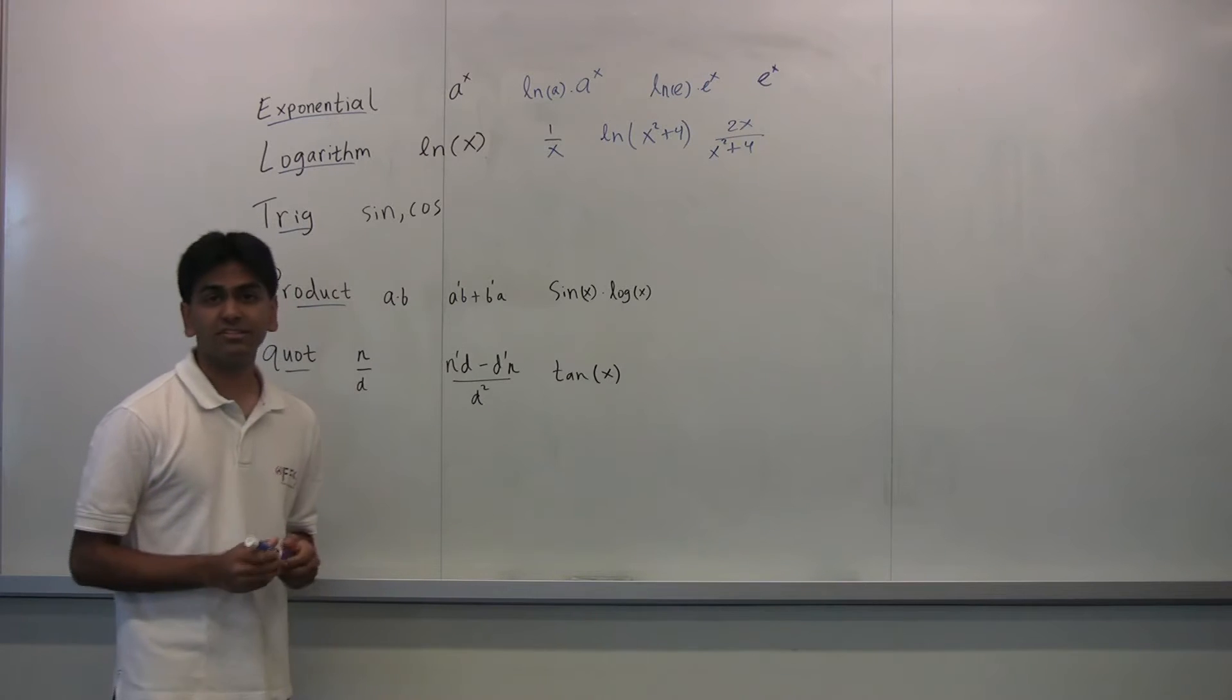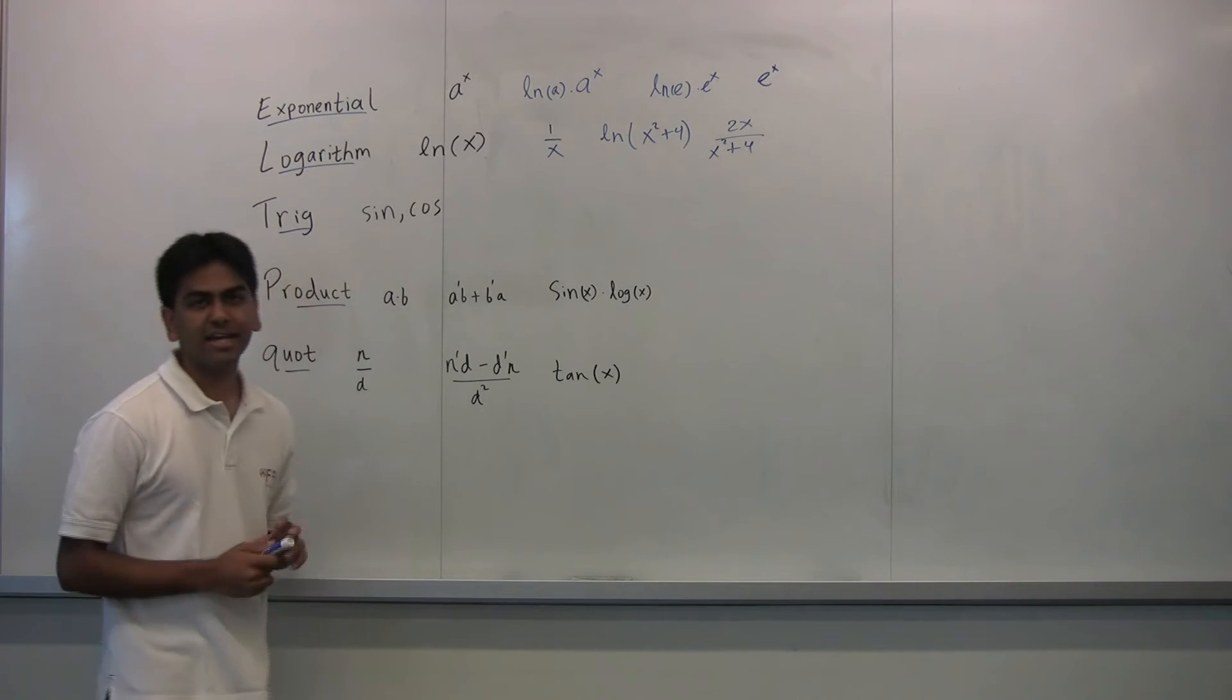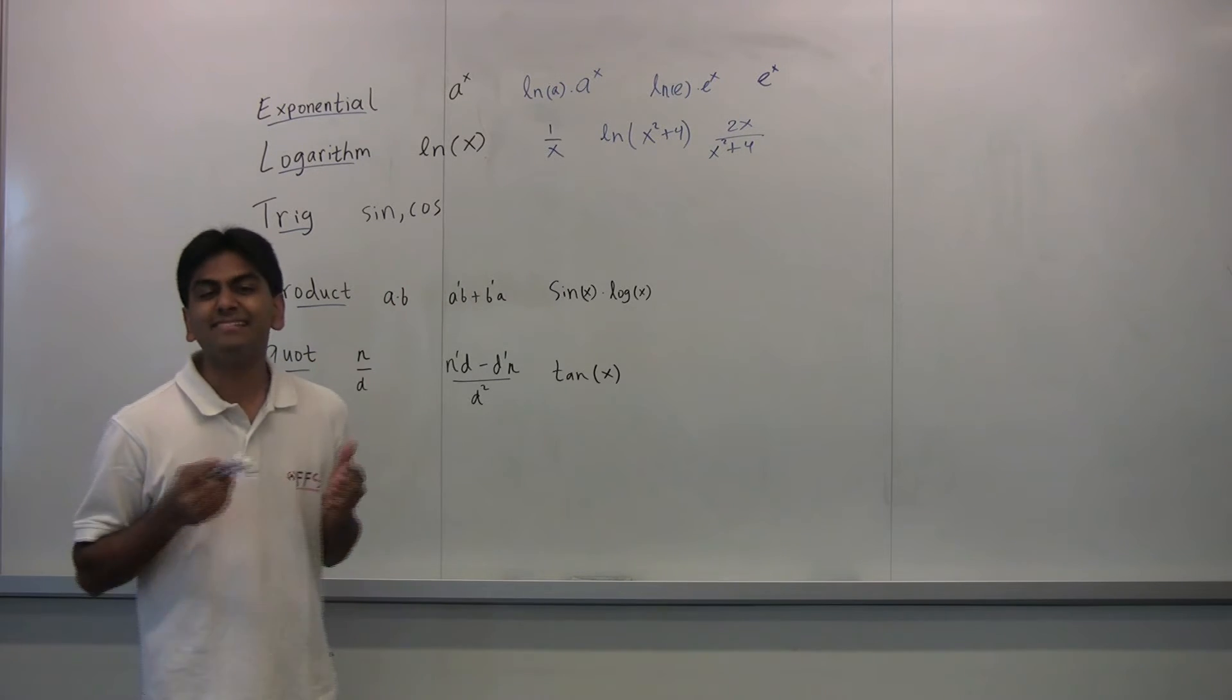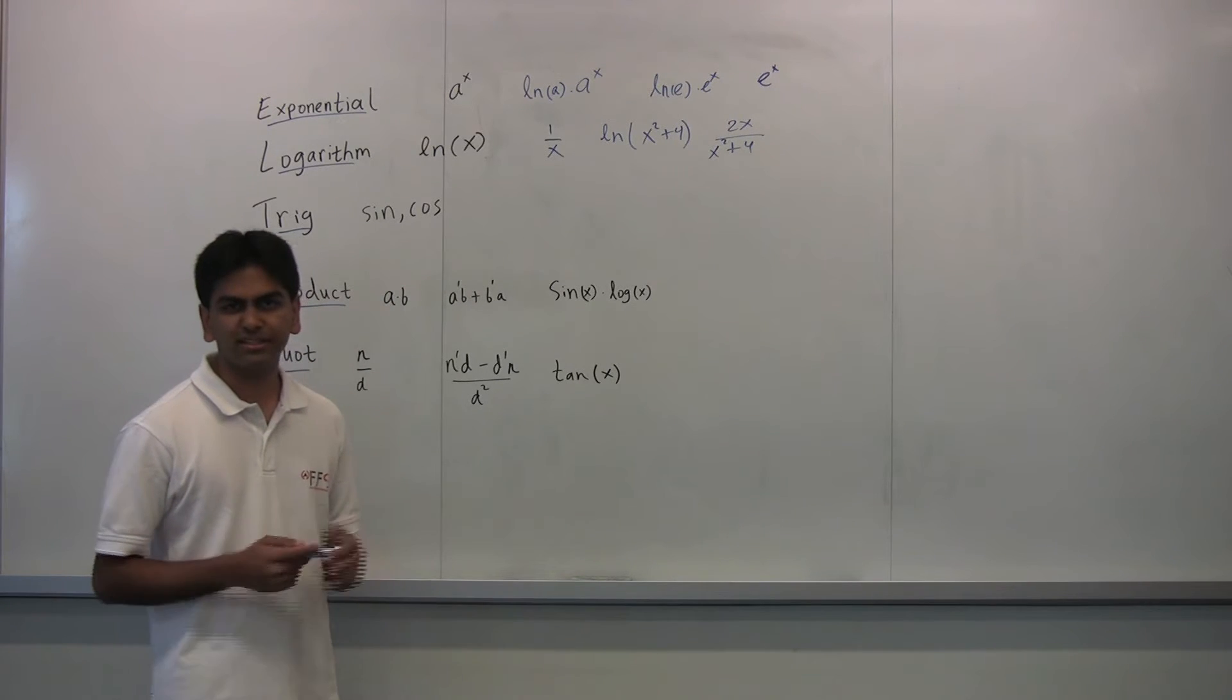Now, looking at trig functions, sine and cosine, the derivative of sine of x is just cosine of x, and the derivative of cosine of x is negative sine of x. That's really all you need to keep in mind for now.